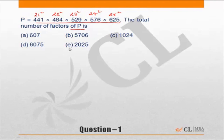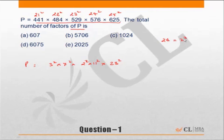Let us write down P in terms of its prime factors. 21 is 3 times 7, so 21 squared becomes 3 squared times 7 squared. 22 squared is 2 squared times 11 squared. 23 is a prime number so we retain it as is. 24 is 2 cubed times 3, so 24 squared becomes 2 to the power 6 times 3 squared.